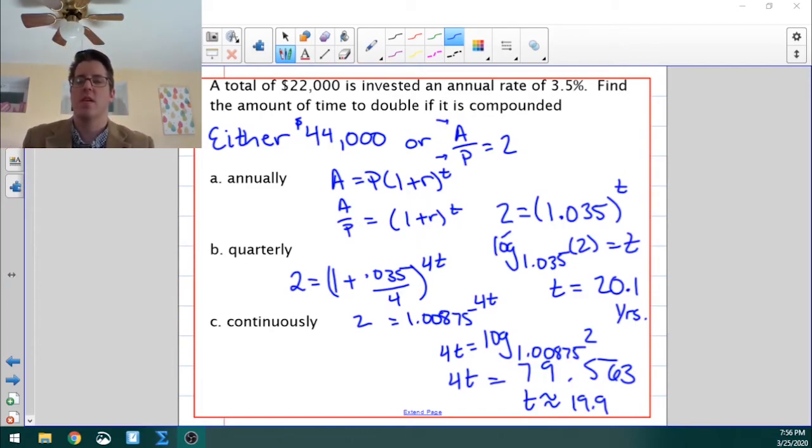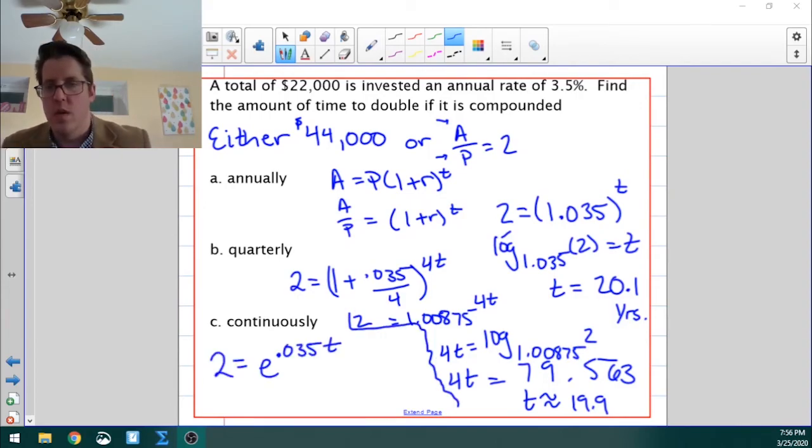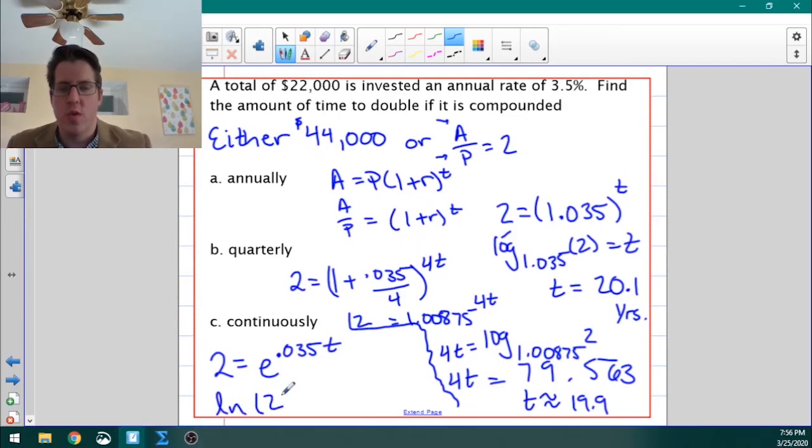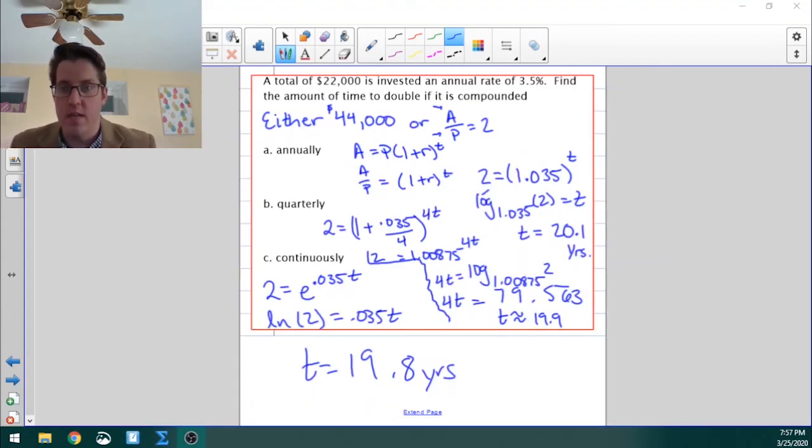Now for compounding continuously, the formula would be this. 2, because we're still doubling, equals e to the .035t. In order to solve this, we're going to take the natural log. The natural log of 2 is .035t. The reason we're taking the natural log of 2 is because we have e as a base. So we're going to take the natural log of both sides. When we simplify that out, we get 19.8 years. So this is barely any difference whatsoever, but there is a difference.